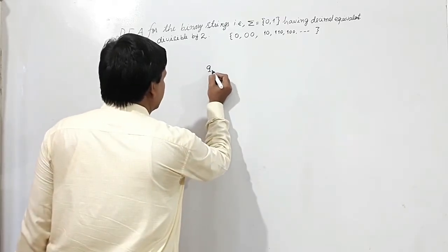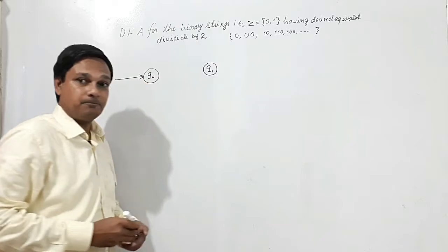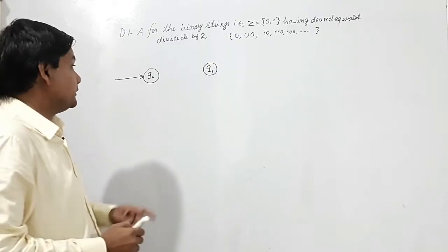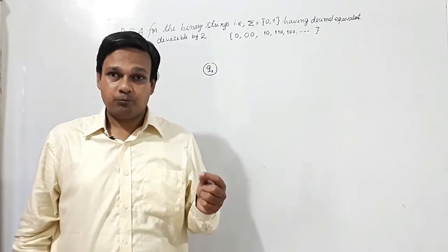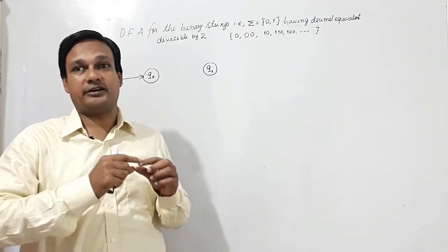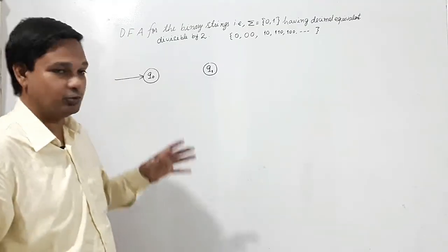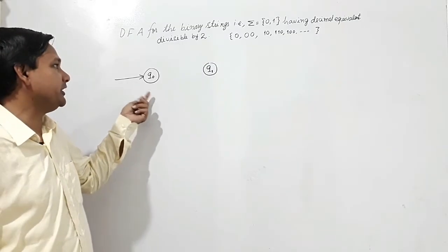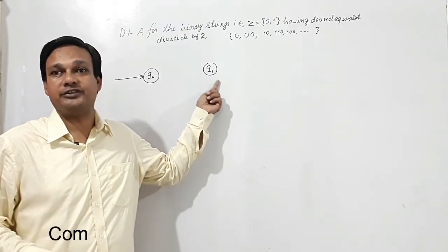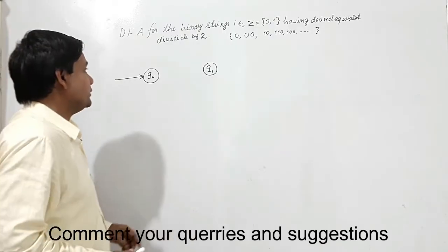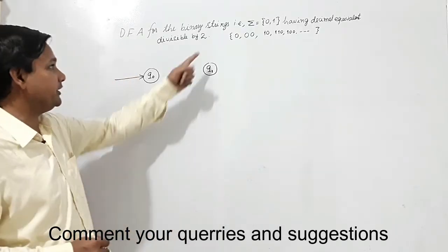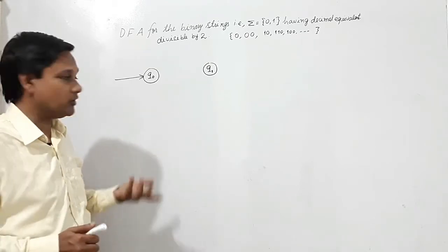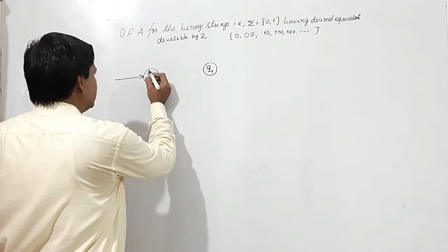So the two states will correspond to remainders 0 and 1. I'll call them Q0 and Q1. If I take a string and compute its decimal equivalent, then divide it by 2: if the remainder is 0, I will make a transition to Q0; if the remainder is 1, I will make a transition to Q1. Since 0 is always divisible by 2, Q0 will also be the final state.